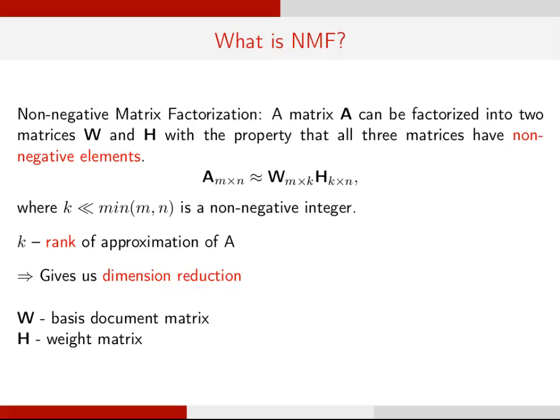K is the rank of the approximation of A. This kind of decomposition provides us with a reduced dimension representation. Here, W is known as the basis document matrix, and H is known as the weight matrix.